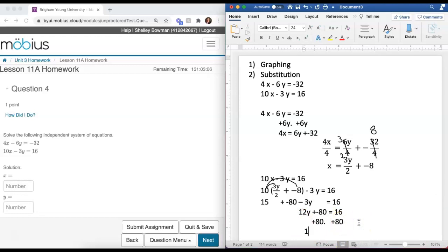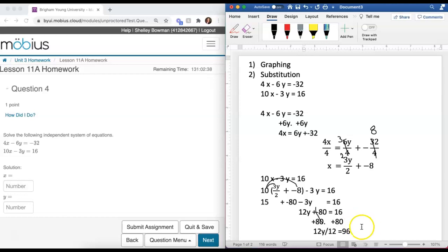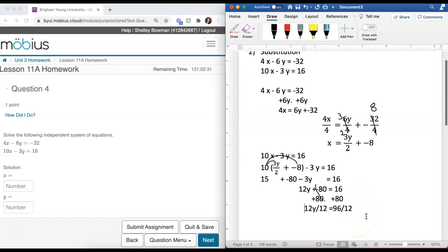Now we have 12y, and we've gotten rid of the 80. On the right-hand side, we have 16 plus 80, which makes this 96. To solve for y, I need to divide both sides by 12. 12 divided by 12 on the left-hand side cancels, we end up with y. 96 divided by 12 gives me 8.